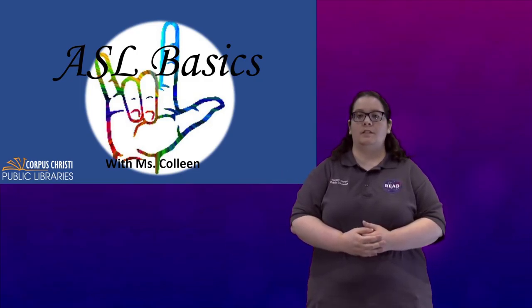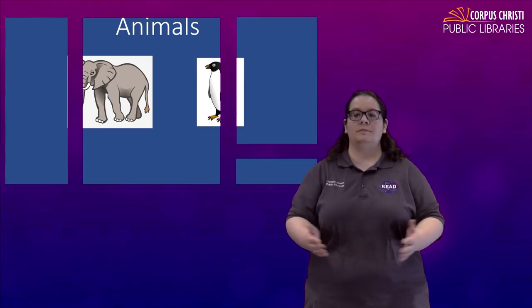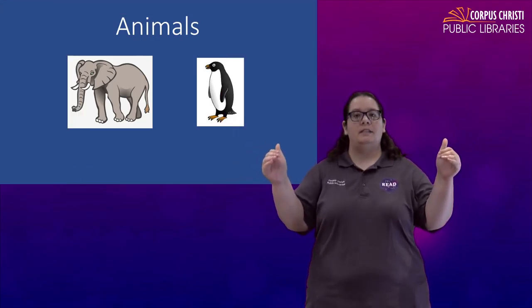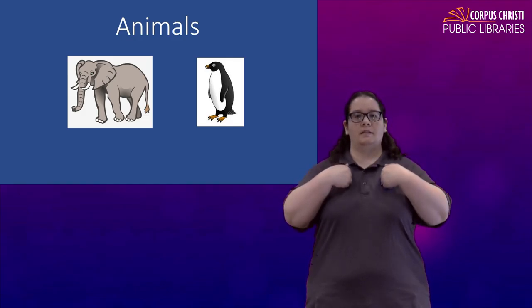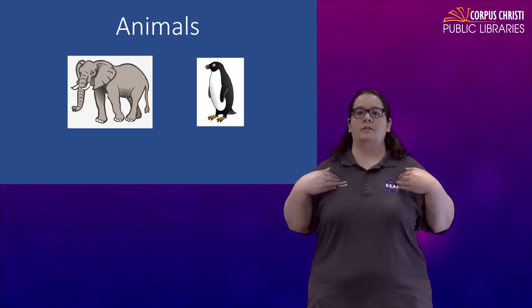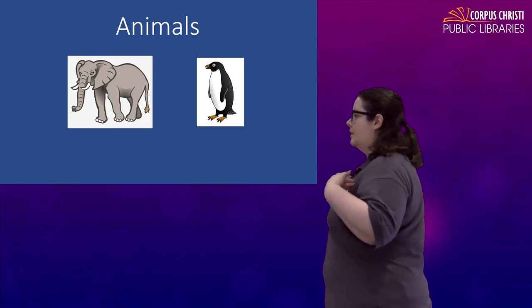Today's topic we are going to be talking about animals. The sign for animal is to take those bent open bees, place them right beneath your shoulders, right around your shoulder blade area, and just kind of wiggle back and forth. Animal.